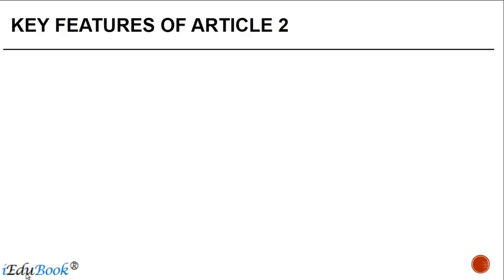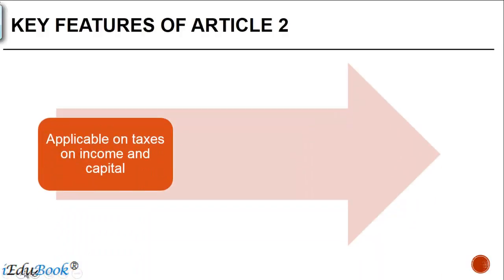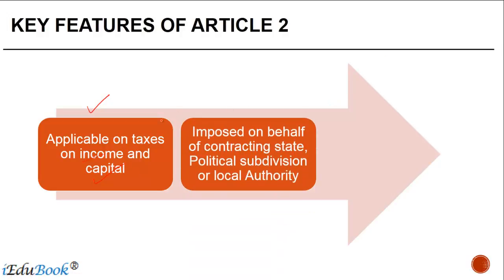So what are the key features of Article 2? We just looked at the definitions earlier. It is applicable on taxes on income and capital. These taxes on income and capital may be imposed on behalf of a contracting state — meaning the country itself, its political subdivision, or a local authority. As long as these are taxes on income and capital, they are covered by the treaty.